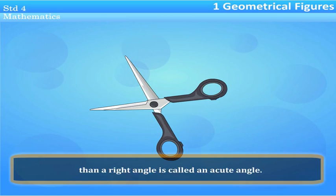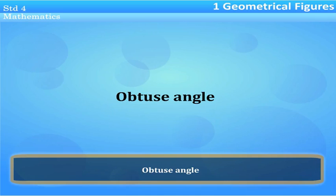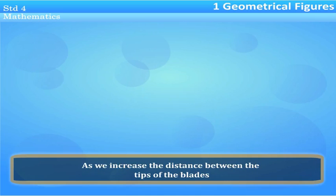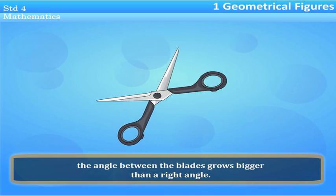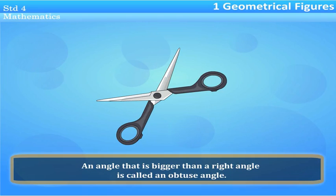Obtuse angle: as we increase the distance between the tips of the blade, the angle between the blades grows bigger than a right angle. An angle that is bigger than a right angle is called an obtuse angle.